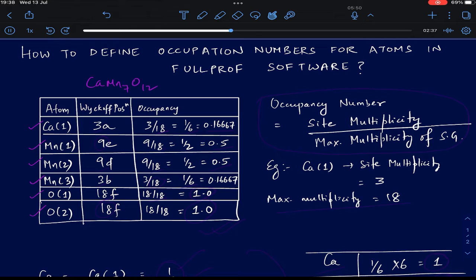This compound stabilizes in the space group which has a maximum multiplicity of 18, which is also given by the highest Wyckoff number coefficient that you can find here. So 18 is the maximum multiplicity of the space group in which this compound is stabilizing.